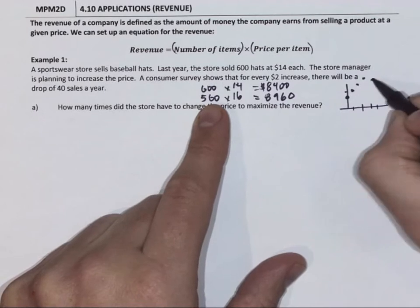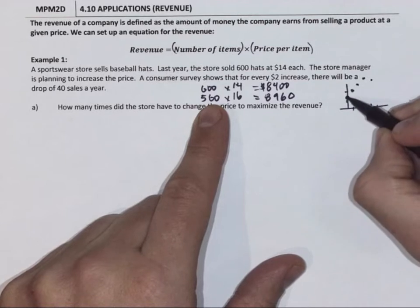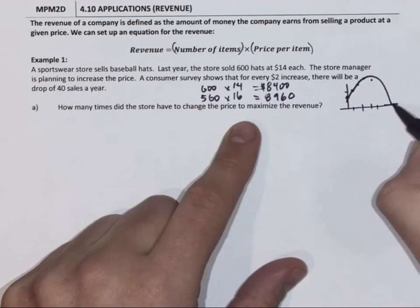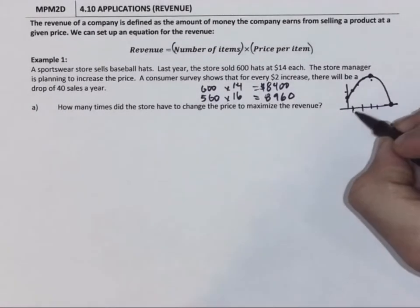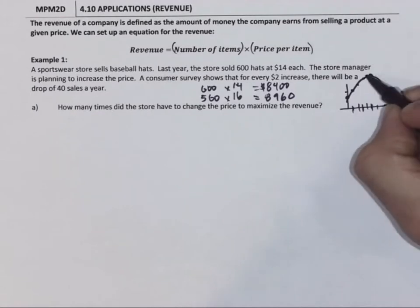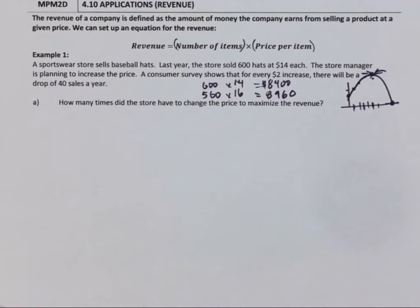And then all of a sudden when we increase it too much, we've lost too many customers and it starts to come down. And that relation is not linear, but guess what? It's a parabola. So at some point, if we increase it 20, 30 times, this is going to cost so much that no one's going to buy it. So we're looking for that sweet spot. How many times can we increase it to get our vertex, the highest cash possible? And that's how it's related to quadratics.